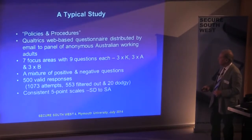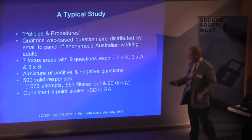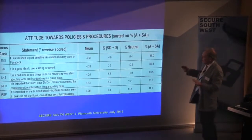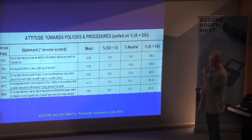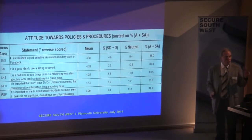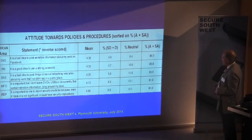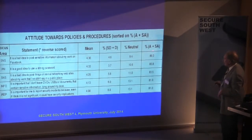We had five-point scales going from strongly disagree to strongly agree. Here are a couple of questions. This is an attitude question — a statement. If it has an asterisk, it was reverse scored. For example: 'It is a bad idea to post sensitive information about my work on Facebook.' Strongly disagree through to strongly agree. We found 86% agreed or strongly agreed across about 500 people on that particular social networking site use, with a mean of 4.36 — pretty high.